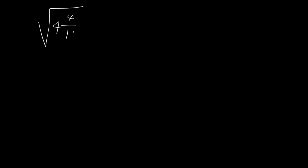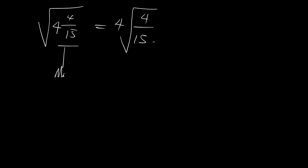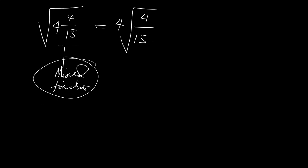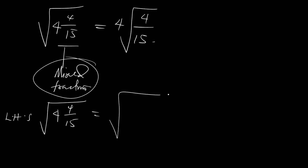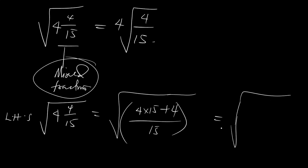The next problem: the square root of 4 whole number 4 all over 15 is equal to 4 times the square root of 4 all over 15. This is a mixed fraction. To prove the left-hand side, which is the square root of 4 whole number 4 all over 15: we have 15 times 4 plus 4, which is 60 plus 4, giving us 64 all over 15.